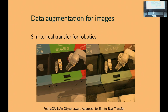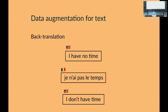Data augmentation isn't limited to images. For translation models, one technique is back-translation: take 'I have no time' in English, translate to French — 'je n'ai pas le temps' — then translate back, and it doesn't always return to the exact same phrase, so you might get 'I don't have time.' Now you have both 'I have no time' and 'I don't have time' mapping to the same French target, giving you an easy way to augment your text dataset.